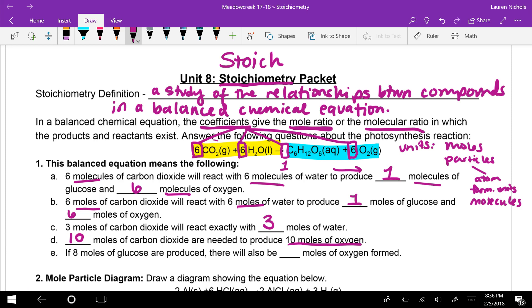So we're seeing that these coefficients are explaining the relationship between these compounds in that equation. So that is what stoichiometry is at the basic level. And so E says if eight moles of glucose are produced, there will also be blank moles of oxygen formed. Well, we know if it's normally one mole of C6H12O6 for every six molecules of O2, well if I have eight moles of these, one times eight gives us eight. So six times eight gives us 48 moles of oxygen formed.